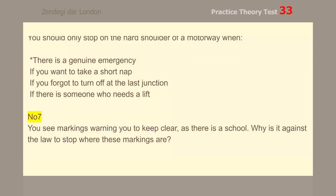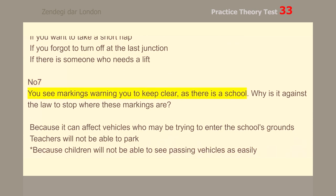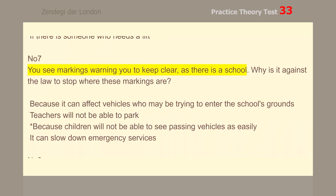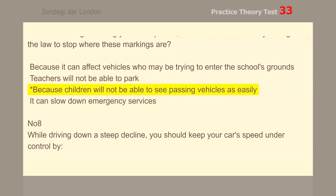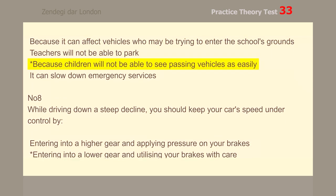Number 7. You see markings warning you to keep clear as there is a school. Why is it against the law to stop where these markings are? Because children will not be able to see passing vehicles as easily.